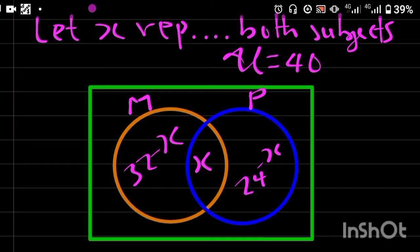That is why we have to subtract X from 32 for us to get the number of students that offer mathematics only. The number of students that offer mathematics only is going to be 32 minus X. The same thing for physics. The number of students that offer physics only is going to be 24 minus X.